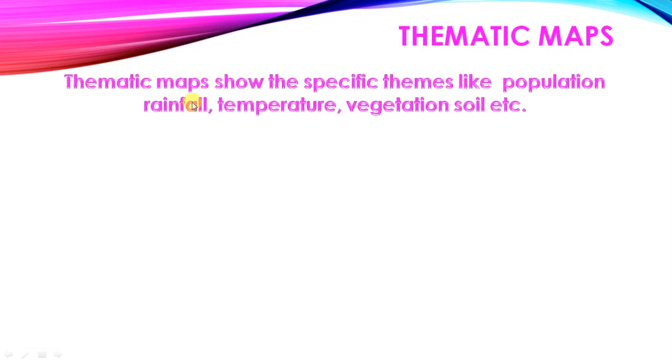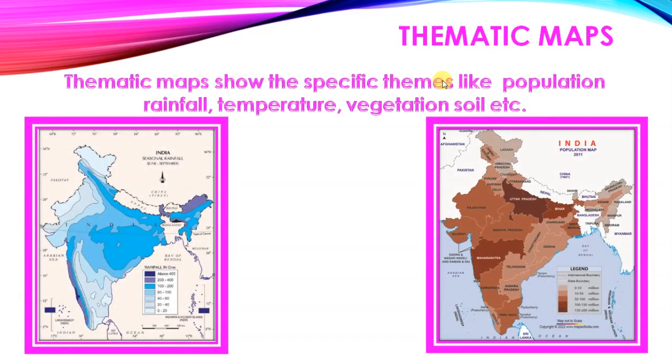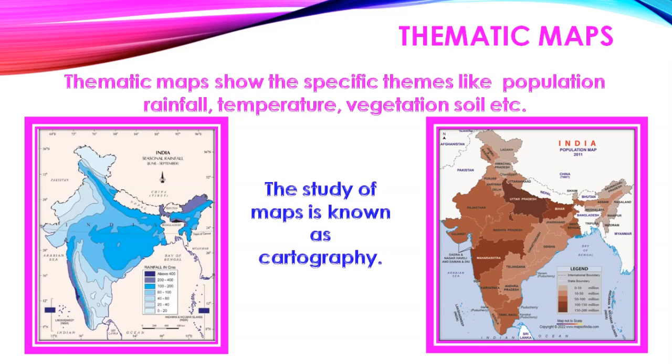Thematic maps. Thematic map shows the specific theme. Thematic map shows specific themes like population, rainfall, temperature, vegetation, soil, etc. This map showing the population. Most populated areas are dark places. More dark, Uttar Pradesh is the most populated state in India. Study of maps is known as cartography.